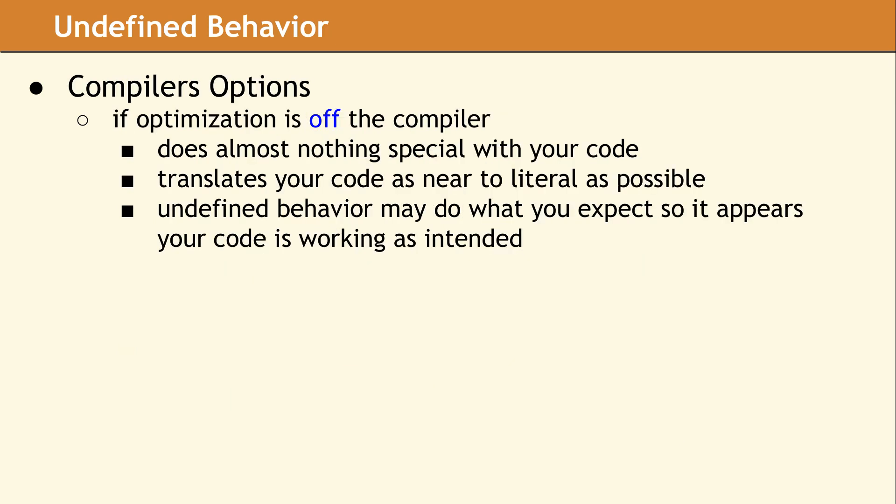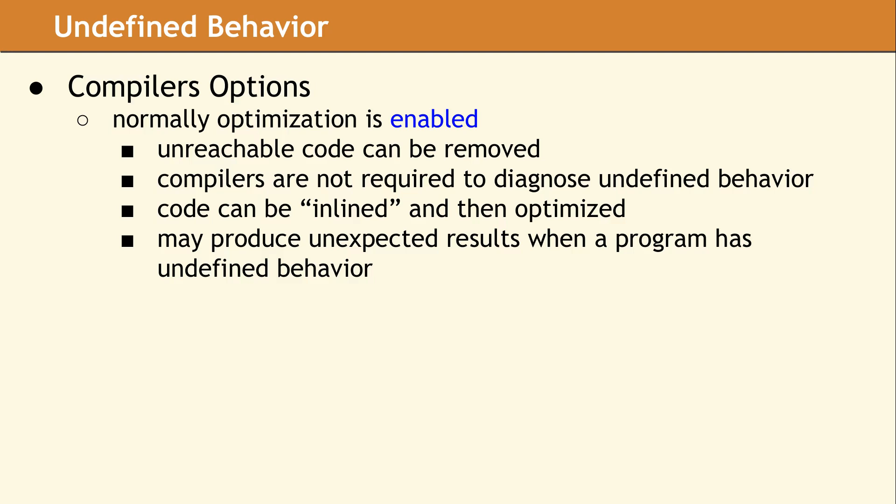It's important to understand how the concept of undefined behavior interacts with your compiler. The main purpose of undefined behavior is to give the compiler room to optimize your code. If optimization is off, the compiler really doesn't do anything special with your code and makes a fairly literal translation of your source code into an executable. With optimization off, it's fairly likely that undefined behavior may do what you expect, so you believe the code is working as intended.